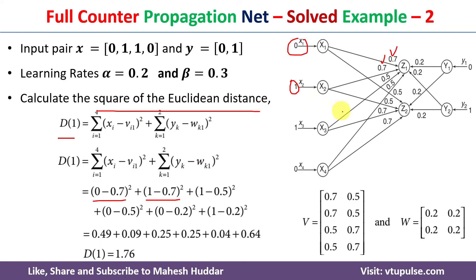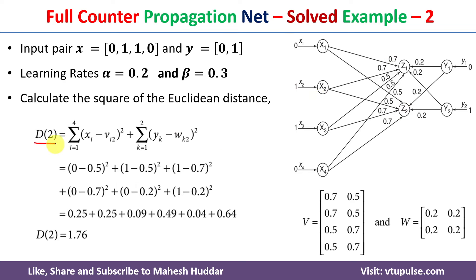With the same approach we calculate the Euclidean distance between the input pair and z2: d2 equals summation for i from 1 to 4 of (x_i minus v_i2) squared, plus summation for k from 1 to 2 of (y_k minus w_k2) squared. When i=1: x1 is 0 and v12 is 0.5. Substituting all values, we get d2 = 1.76.